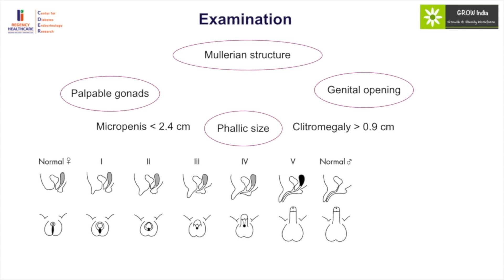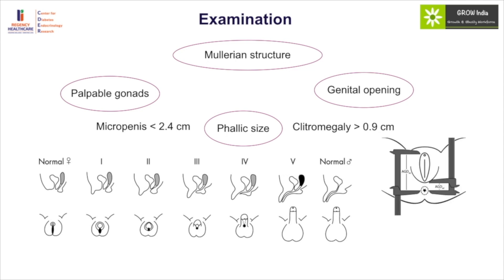The external genital appearance can be rated using the Prader staging, which rates from normal female appearance to normal male appearance in five categories, wherein category three and above have a common urogenital opening and category five is near-normal male appearance. It is also helpful to calculate the anogenital ratio, which gives an indication of the level of virilization. It is the ratio of the anus-to-posterior fourchette distance versus the anus-to-anterior fourchette distance; a ratio more than 0.5 is indicative of virilization.